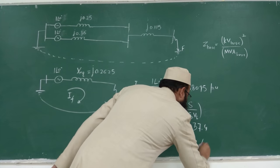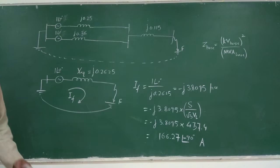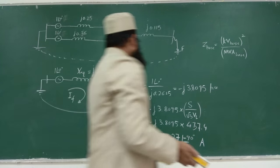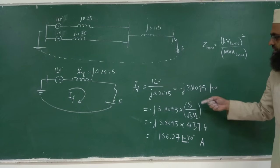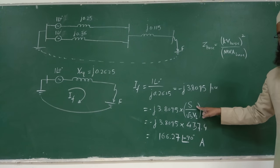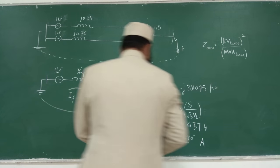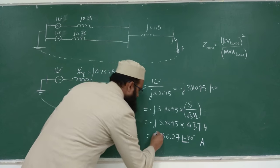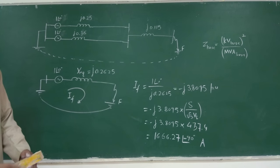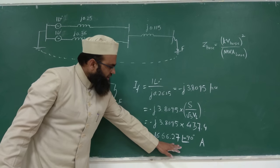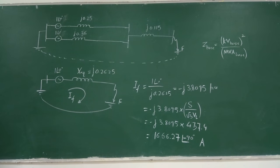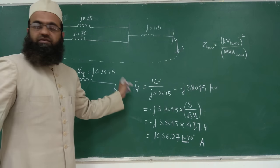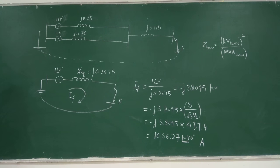So the actual fault current has been evaluated. The next objective is to evaluate the short circuit MVA or fault MVA. Short circuit MVA per unit = VF_prefault per unit × IF per unit. Since VF = 1 per unit (no drop before fault), the short circuit MVA per unit equals 3.095 per unit.